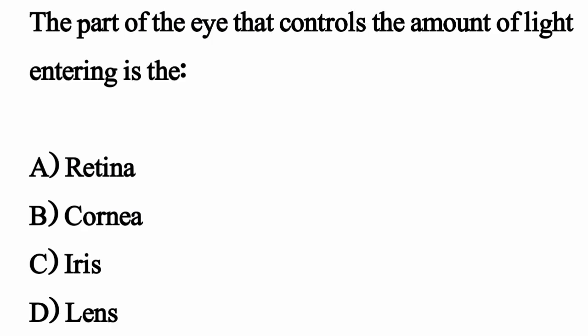The part of the eye that controls the amount of light entering is — the correct option is Option C: Iris.